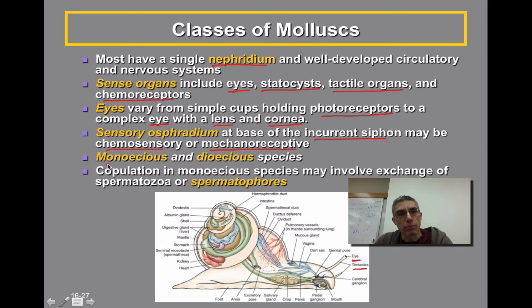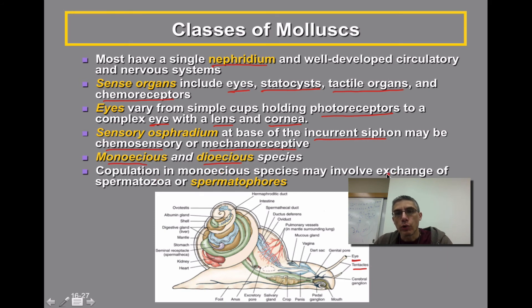These animals are considered both monoecious and dioecious, so you can find representatives of both groups. Monoecious means an animal has both male and female organs within the same animal; dioecious means separate sexes. If you are talking about a monoecious species, copulation would sometimes involve the exchange of sperm or spermatophores between animals. Even though you might have both sets of reproductive organs, mating would still have to occur to introduce genetic diversity within that population.